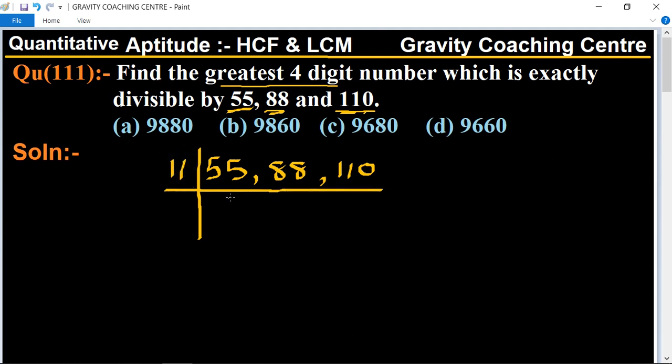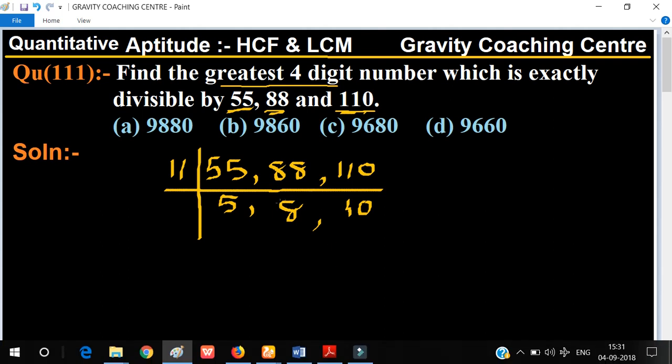First we'll take the table of 11. 11 times 5 gives 55, 11 times 8 gives 88, and 11 times 10 gives 110.